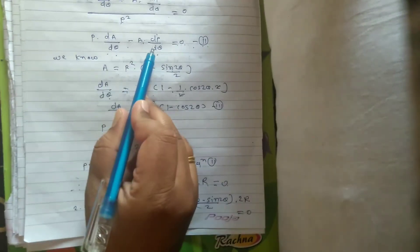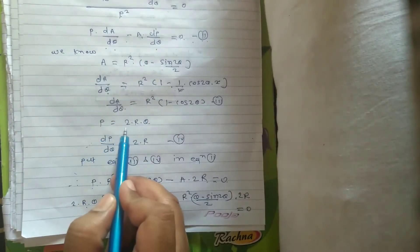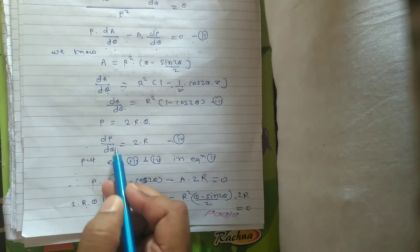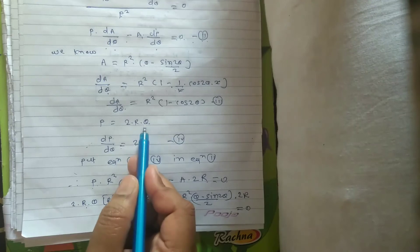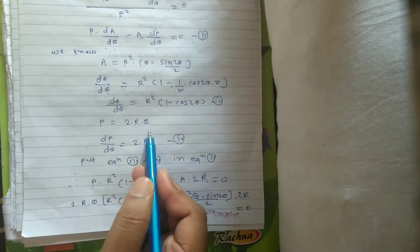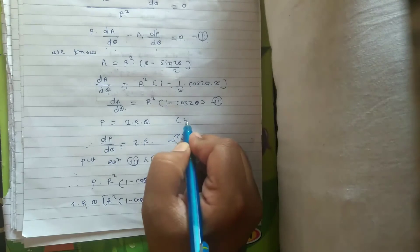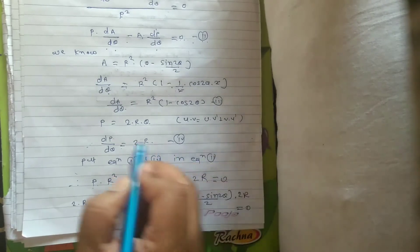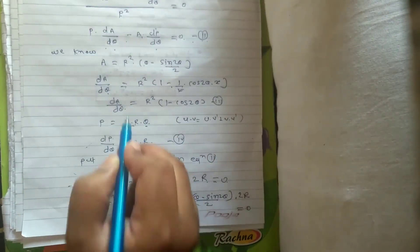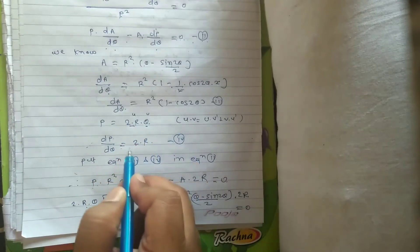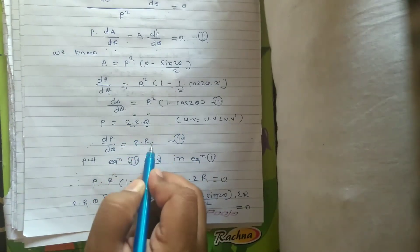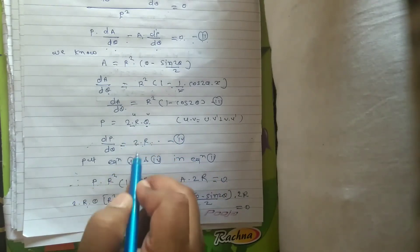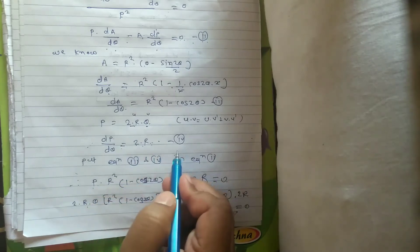Now we find dP/dθ. The perimeter P = 2rθ. Taking the derivative with respect to θ using the product rule (u·v' + v·u'): here u = 2r and v = θ. So dP/dθ = 2r·(1) + θ·(0) = 2r. This is equation number 4.